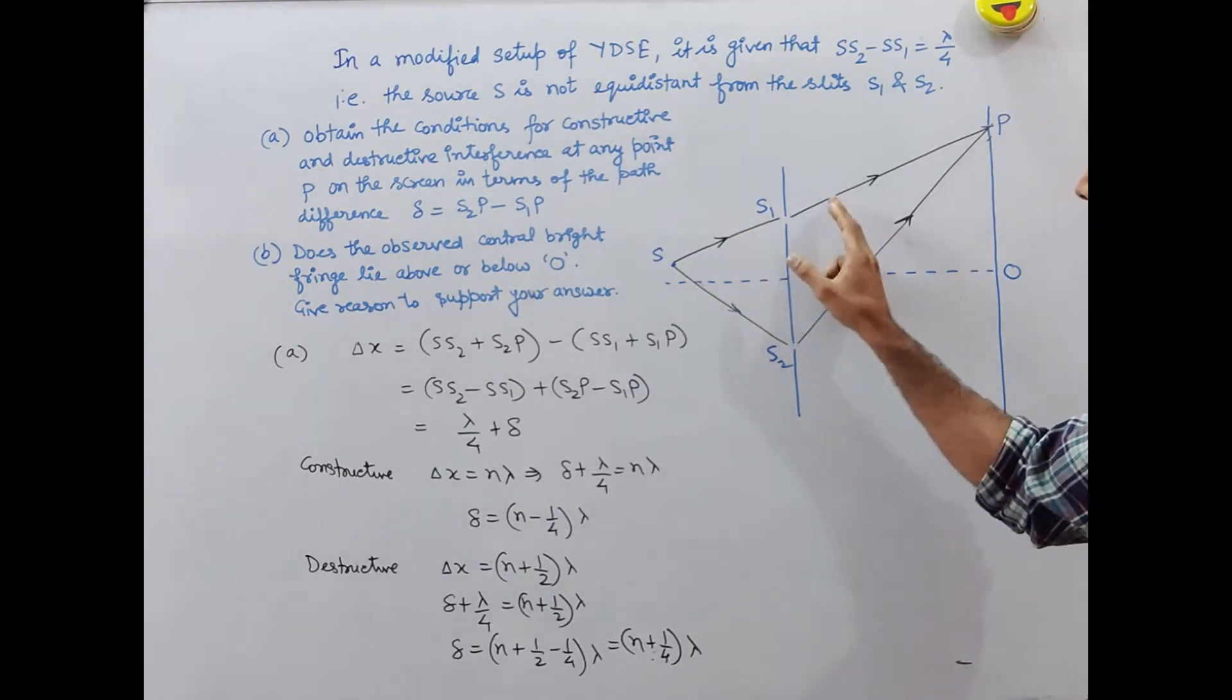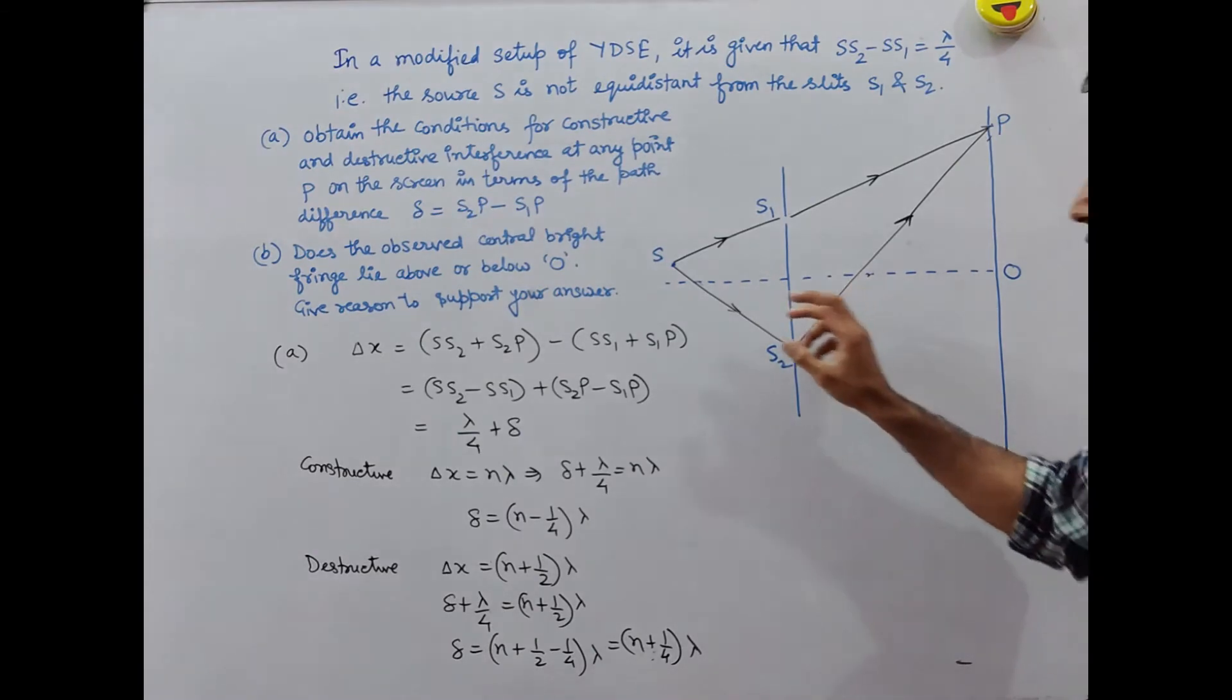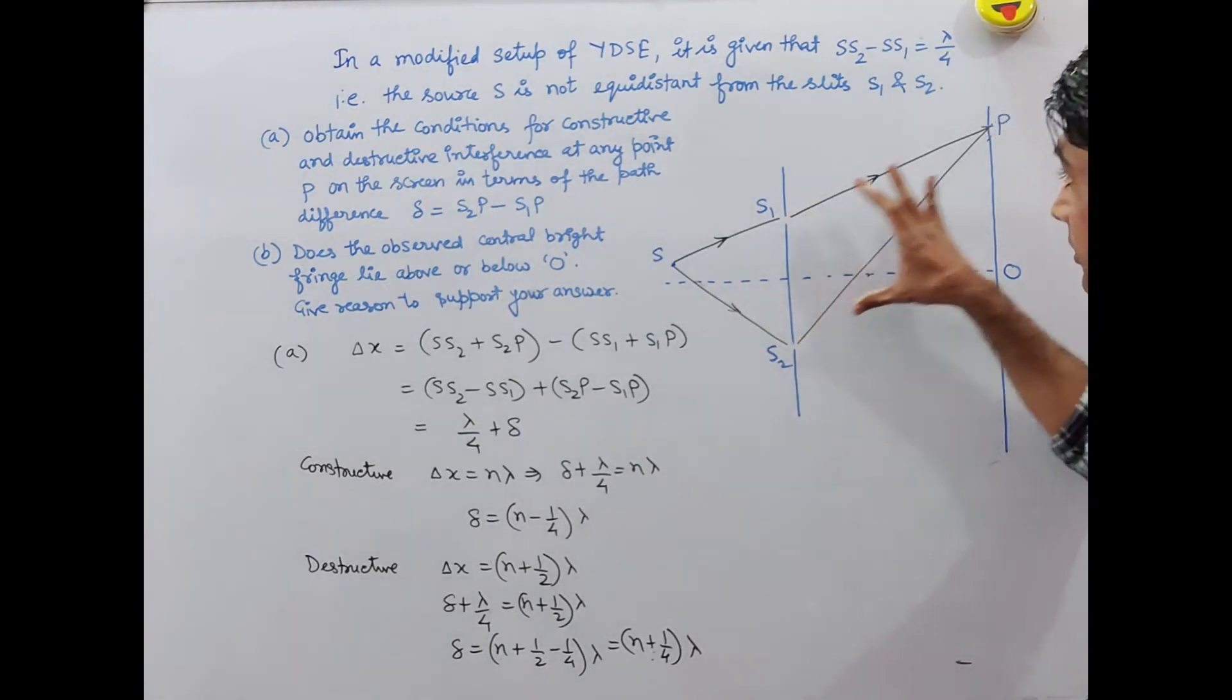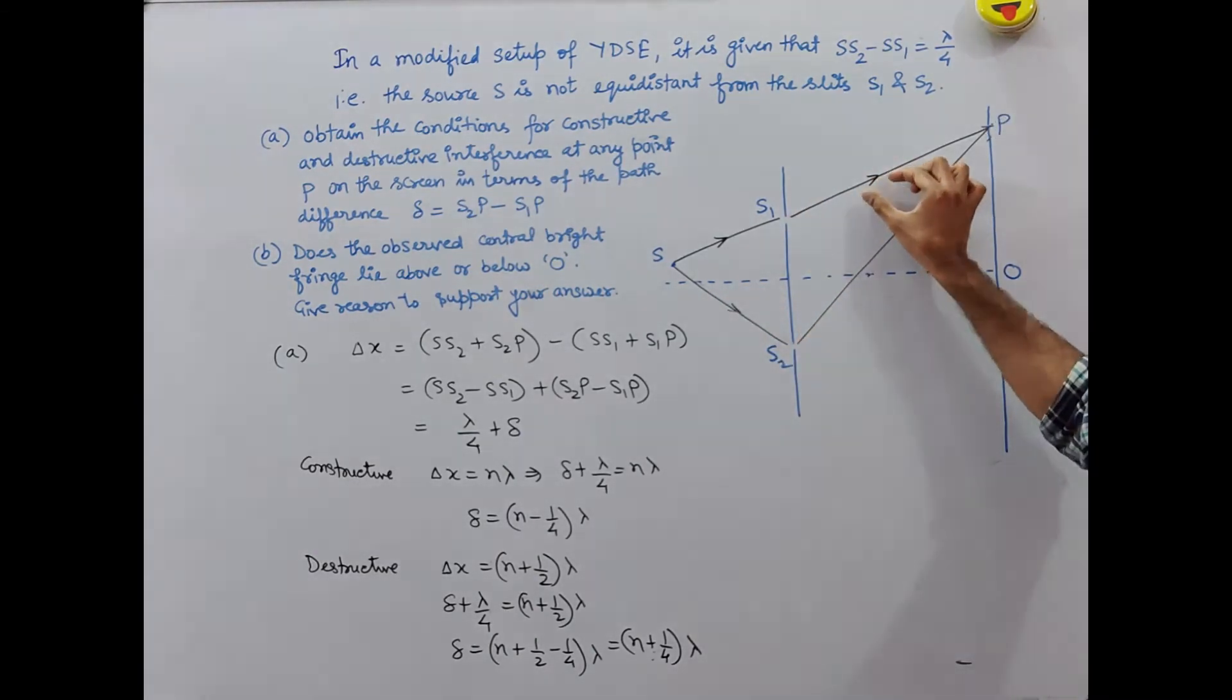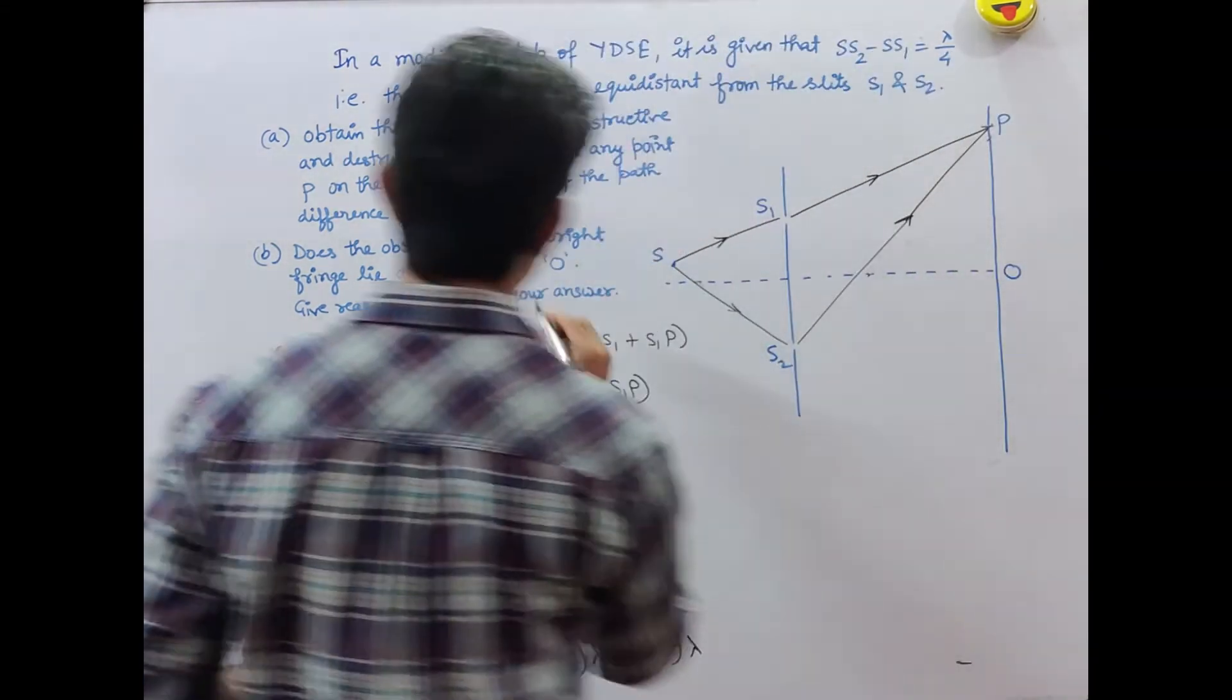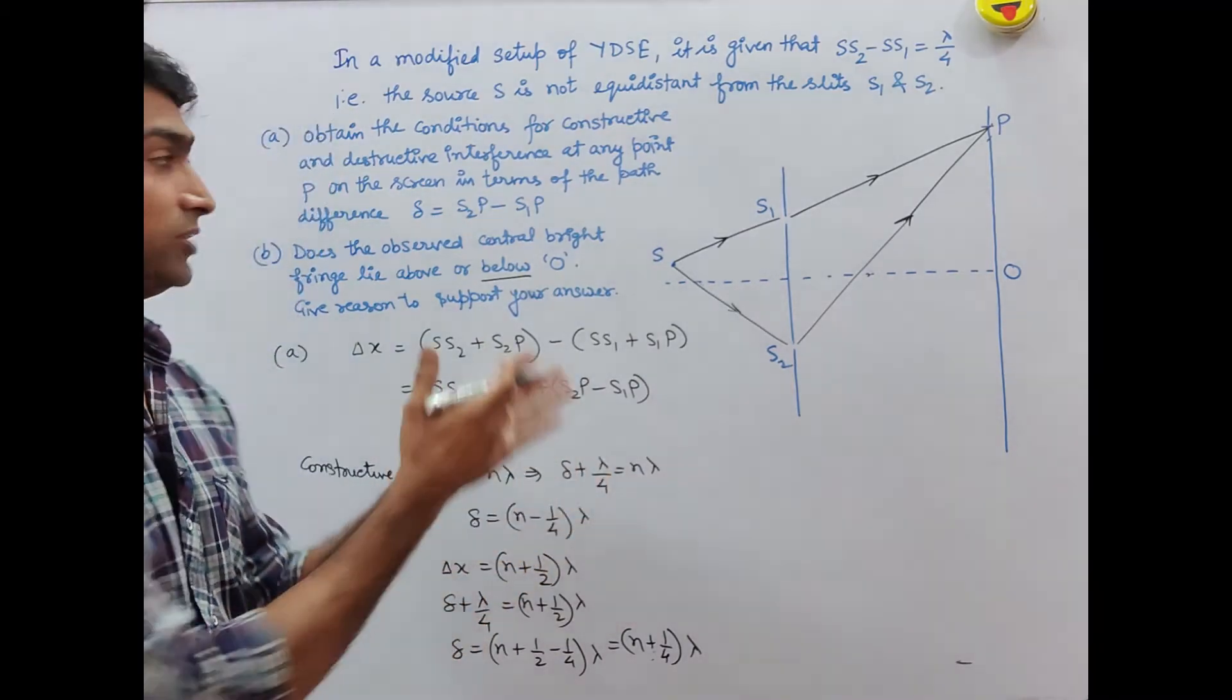When going upward, this needs to be added. Since this is already greater, it needs to be equalized. So it will be more when the point is below rather than above. The answer will be below.